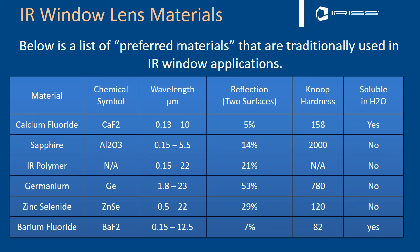Germanium works between 1.8 and 23 microns. It is very reflective but we can coat it to reduce reflections and increase transmission. Knoop hardness is not too bad. It's what you'll see most infrared camera lenses being made from — a good industrial grade material that is not soluble. Zinc selenide works from 0.5 to 22 microns. Knoop hardness is still quite brittle but it's something we use in R&D type applications. We've made quite a few zinc selenide and germanium windows for our R&D client base.